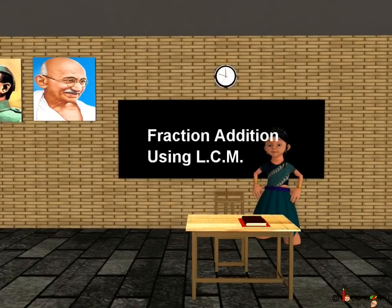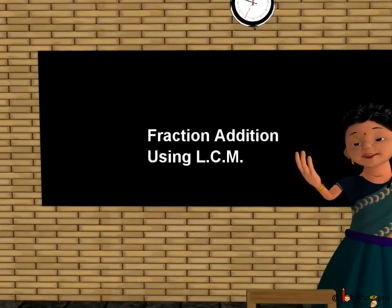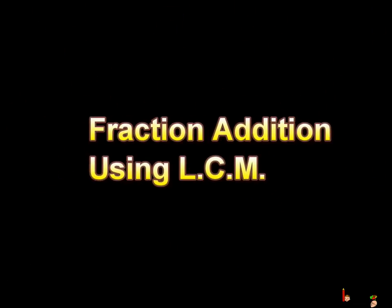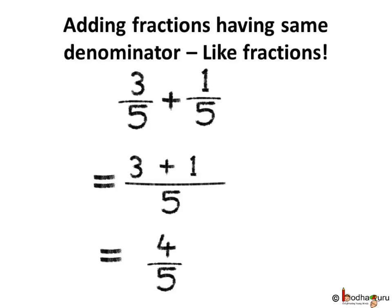Good morning children. You know what fractions are and how to add simple fractions. If we are adding 3 by 5 and 1 by 5, the denominators are the same — that is, they are like fractions. So we just add the numerators, which are 3 and 1. So the answer is 4 by 5.